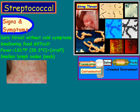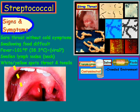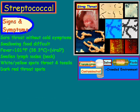There are swollen lymph nodes, typically on the neck, similar to the picture shown here. Another sign is white or yellow spots on the throat and the tonsils, similar to the picture here. And there are also dark red spots on the throat. Another sign or symptom is swollen tonsils. Keep in mind that swollen tonsils could also be the result of a viral infection.